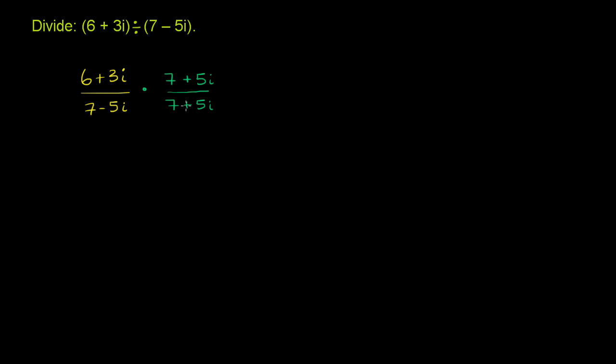And anything divided by itself is going to be 1, assuming that you're not dealing with 0. 0 over 0 is undefined. But 7 plus 5i over 7 plus 5i is 1. So we're not changing the value of this. But what this does is it allows us to get rid of the imaginary part in the denominator.